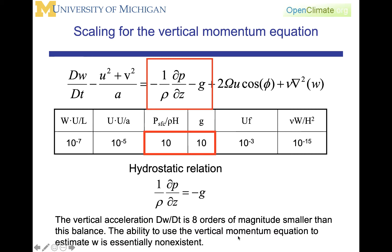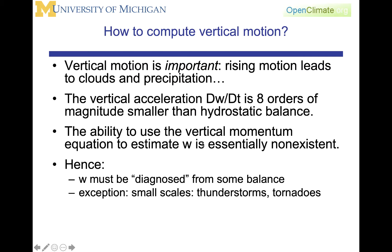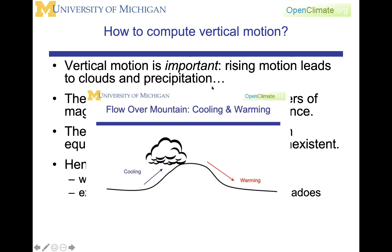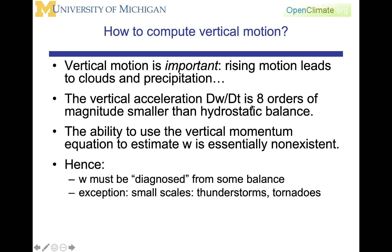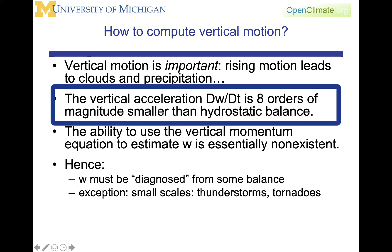Hence, the ability to use the vertical momentum equation to estimate the vertical velocity is essentially non-existent. It's very difficult to do a calculation that allows you to turn out a quantity that you're interested in that's 8 orders of magnitude smaller than the other terms of the equation. Hence, we are left with a problem of how to compute vertical motion. We know that vertical motion is important because rising motion leads to clouds and precipitation because as the air rises, it cools. But the vertical acceleration is 8 orders of magnitude smaller than the hydrostatic balance.